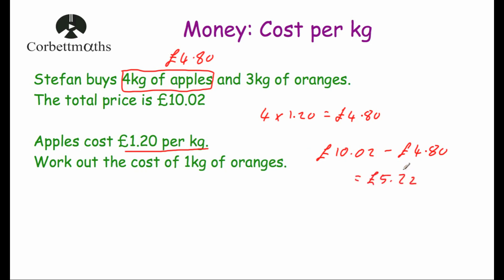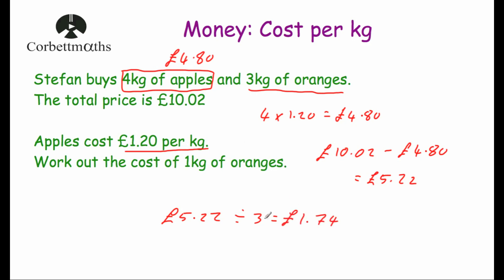That £5.22 was for three kilograms of oranges, but we want the cost of one kilogram. So we divide £5.22 by three, which gives us £1.74. Therefore, one kilogram of oranges costs £1.74.